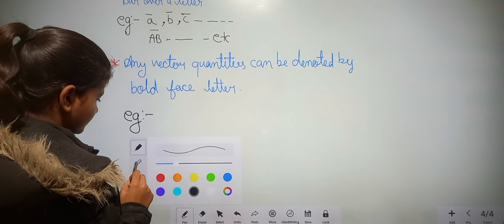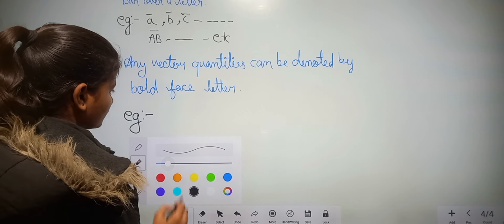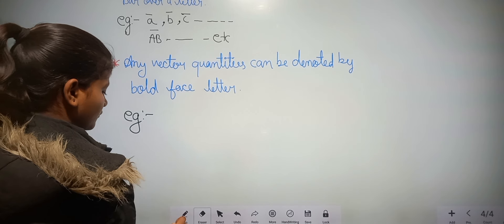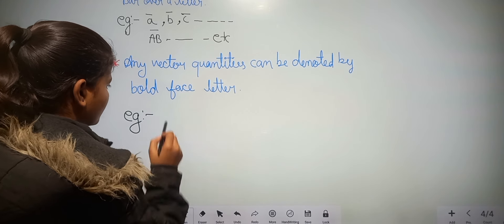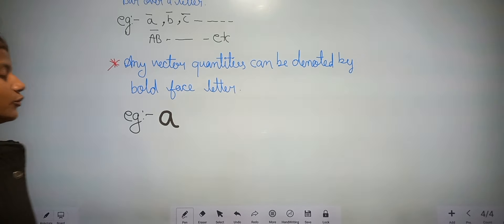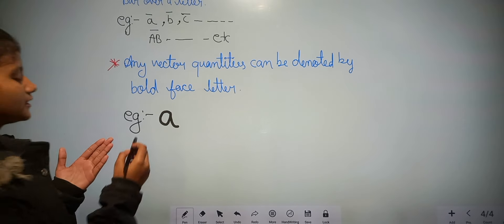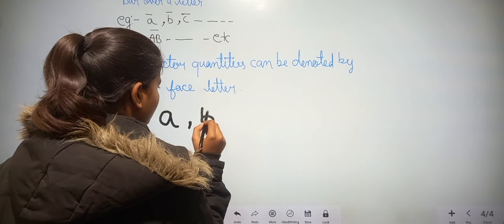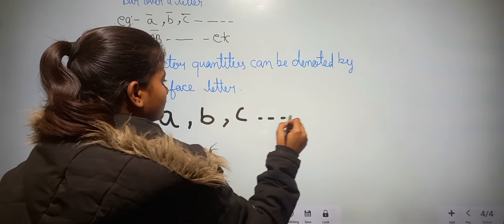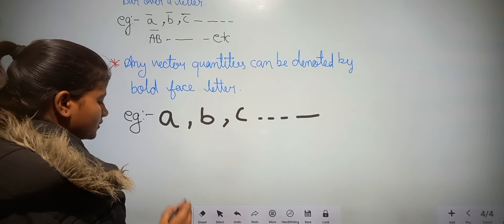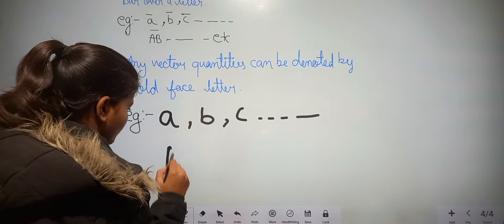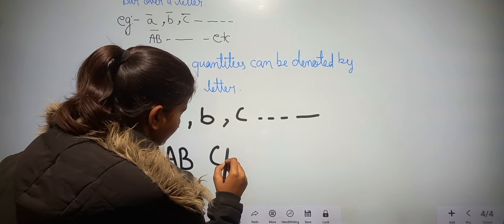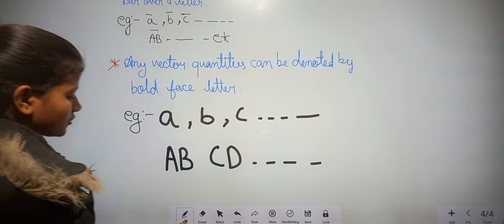These are bold-faced letters. This is also called a vector quantity — for example, v, c, s, and so on.